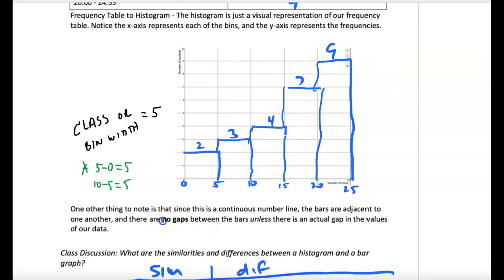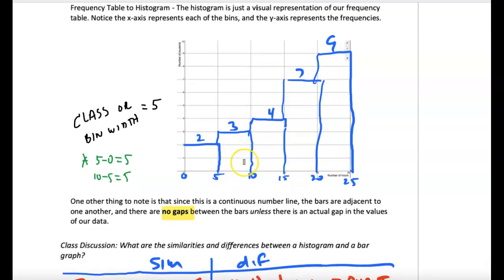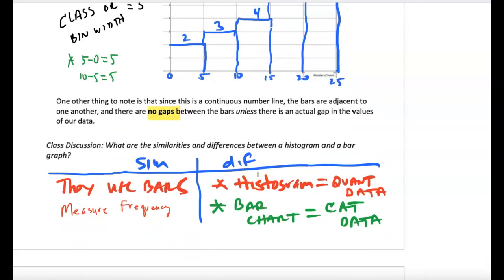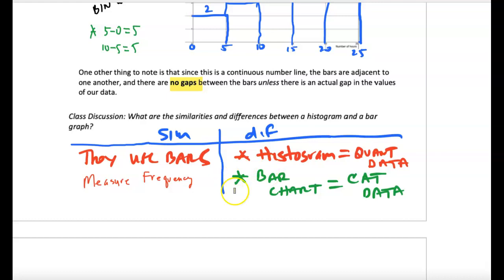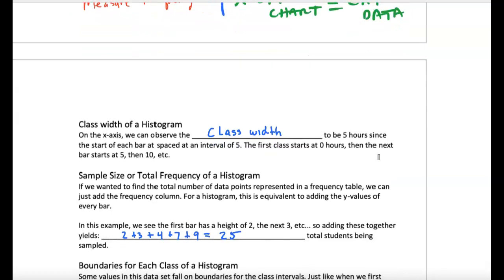Oftentimes, there are no gaps in a histogram because we're talking about continuous values versus a bar graph, which you have categories. The spaces don't mean anything. If there is a gap in between the values, that means there's no values inside of there. So something to keep in mind. Similarities and differences, again, take a quick peek at that. But they both use bars. They measure frequency or relative frequency. And quantitative versus categorical data.